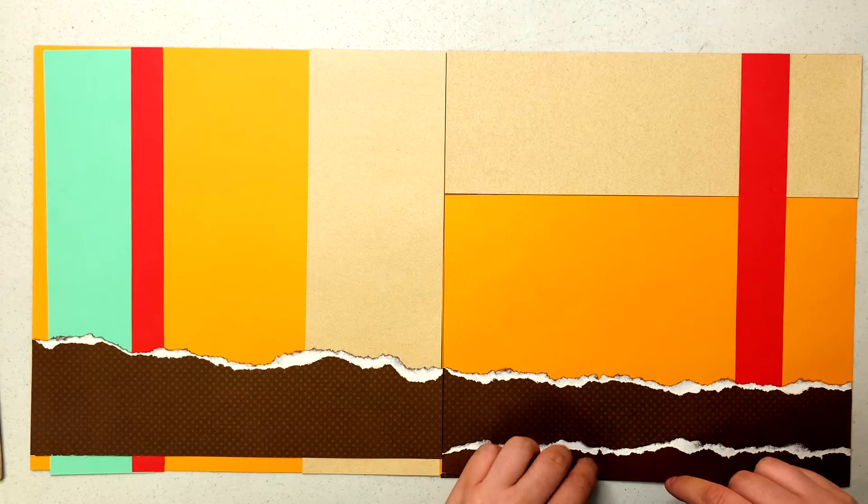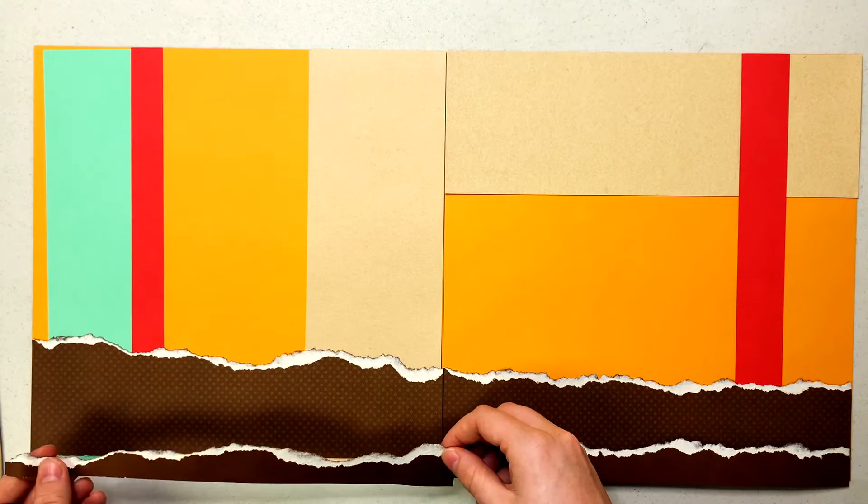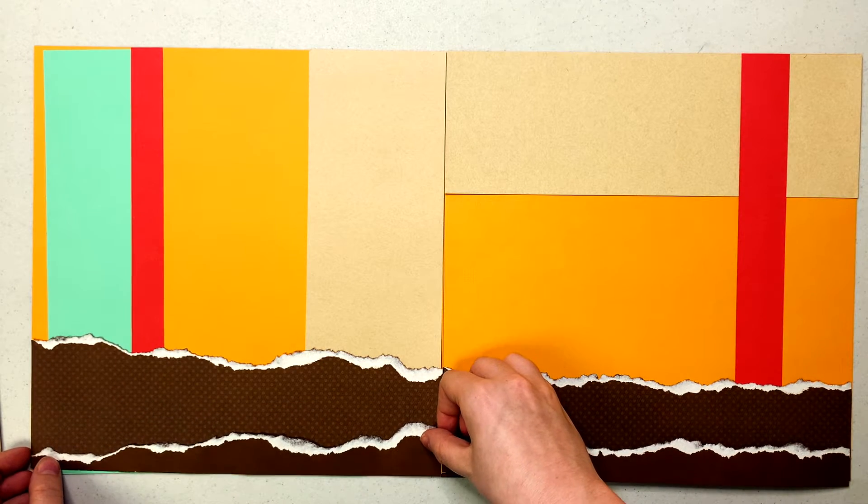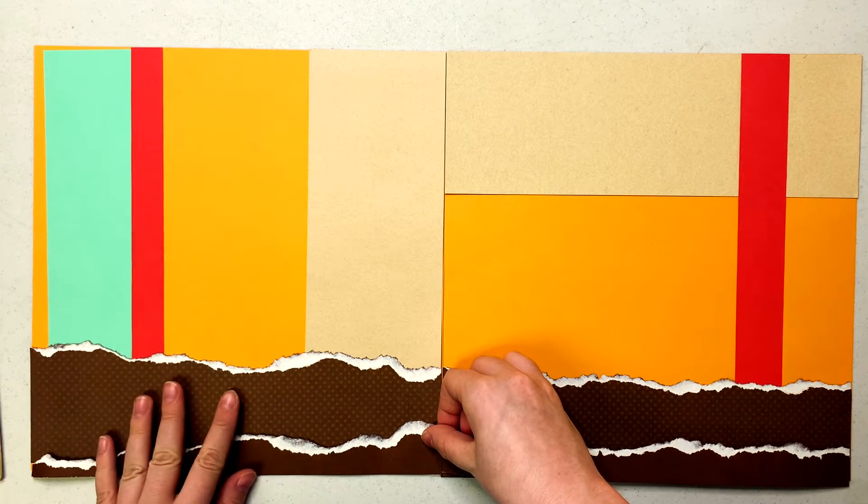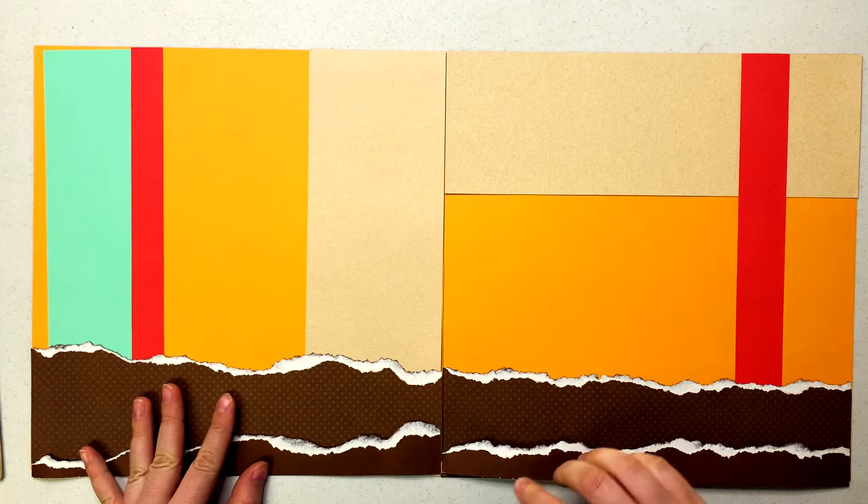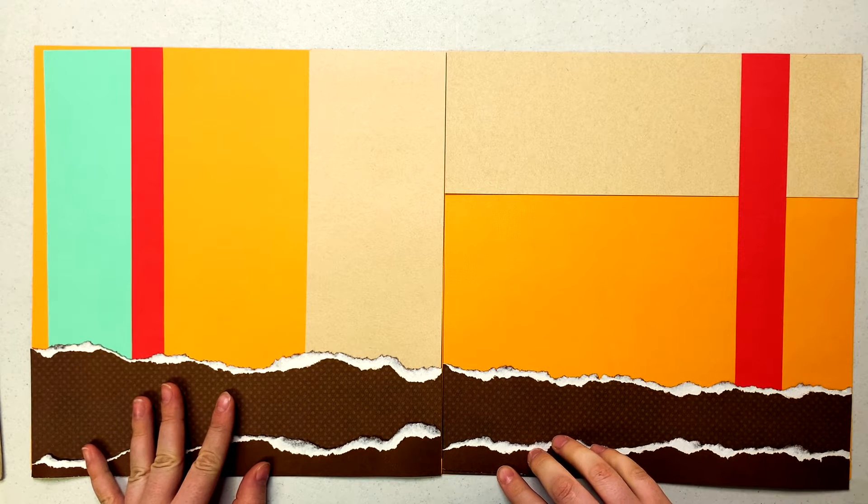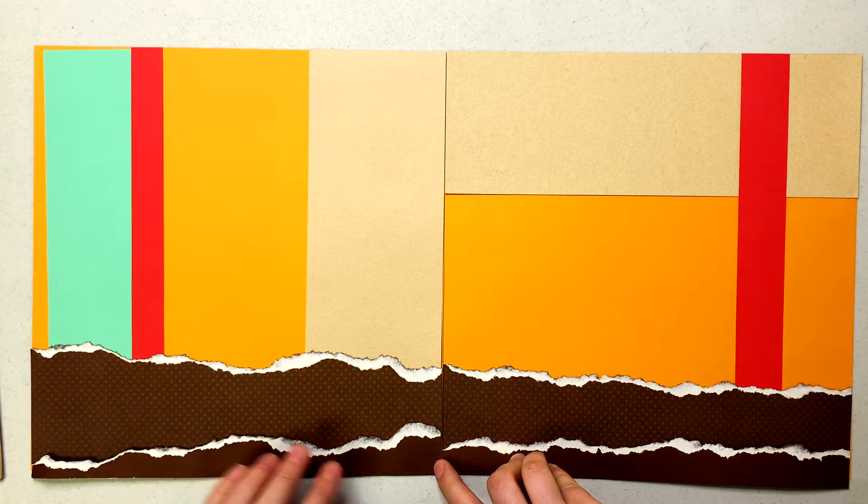I'm going to overlap it with the piece that I tore off and so you guys can see that because I did that these pieces are going to look just about even even though obviously one is a little bit shorter than the other when you take off these bottom sections.